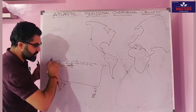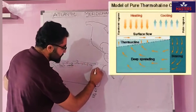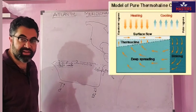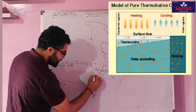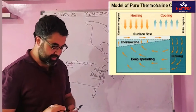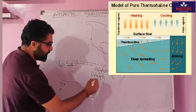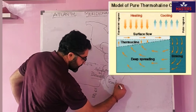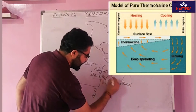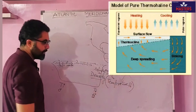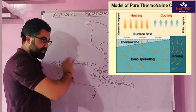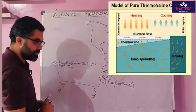As the salty water moves north, the salinity in the subpolar region increases. This also increases the density. There are two reasons for the increase in density: number one is decrease in temperature, and number two is increase in salinity. With increasing salinity and decreasing temperature, the water becomes denser.